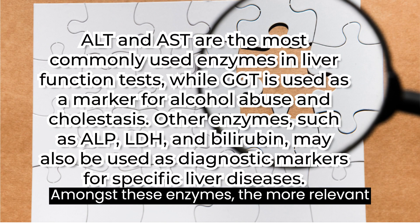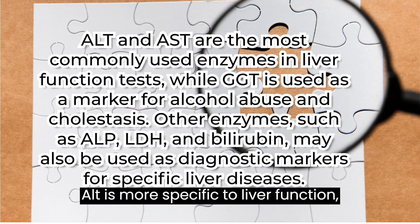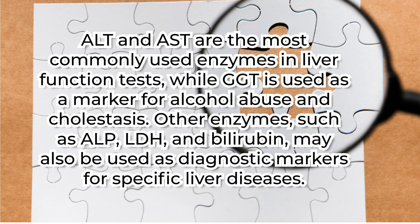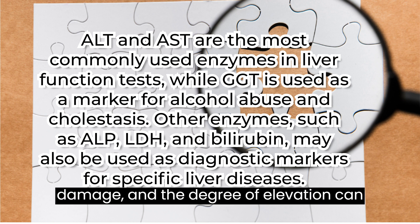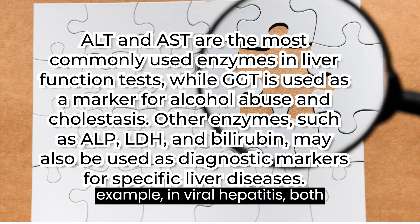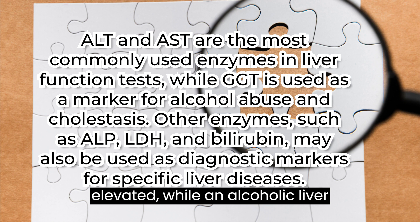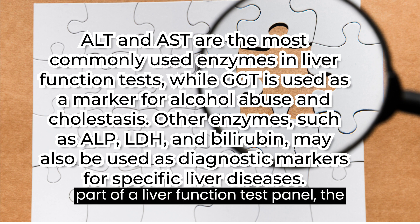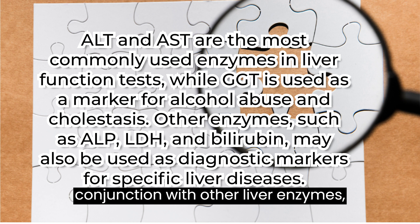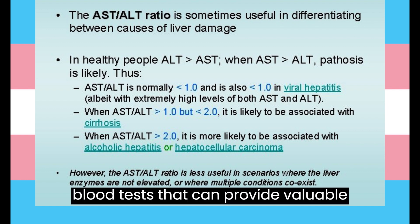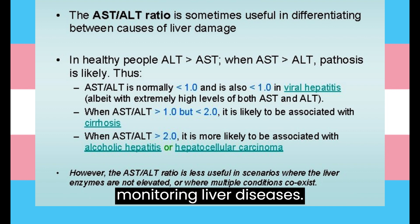Among these enzymes, the most relevant ones are AST and ALT. ALT is more specific to liver function, while AST is found in other organs such as the heart and muscles as well as the liver. Elevated levels of AST and ALT are indicative of liver damage, and the degree of elevation can provide clues to the severity and type of liver disease. For example, in viral hepatitis both AST and ALT levels are typically elevated, while in alcoholic liver disease ALT is more likely to be elevated than AST. As part of a liver function test panel, AST and ALT levels are often used in conjunction with other liver enzymes such as GGT to assess liver function comprehensively.